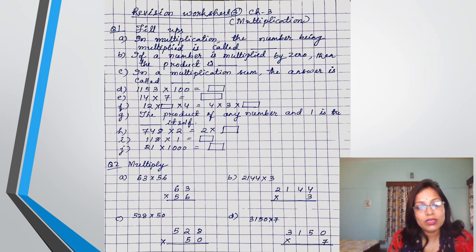Next question to multiply. 63 multiplied by 56. So here the multiplier, so 63 is called multiplicand, 56 is multiplier. Here the multiplier is a two-digit number. So very carefully remember when you are multiplying by 6, you start from this one's place below 6. But when you are multiplying by 5, you start writing from the tens place, means below 5 only.